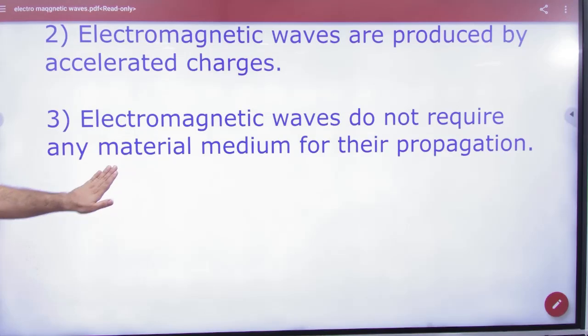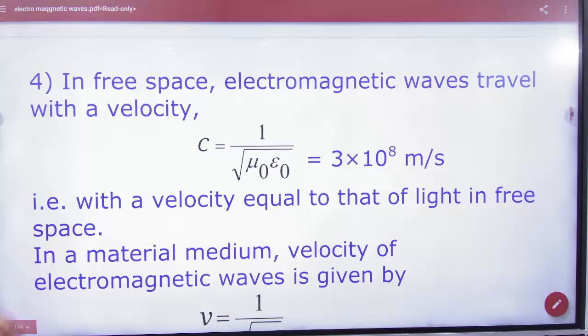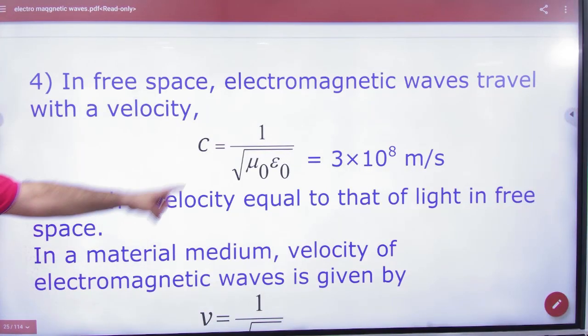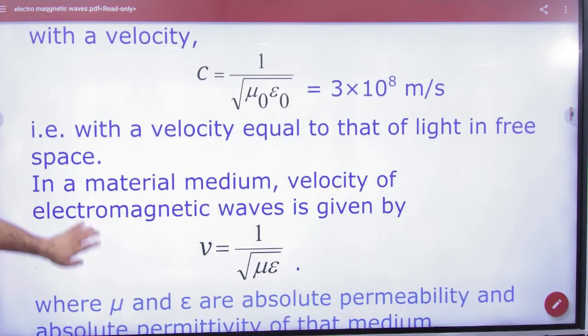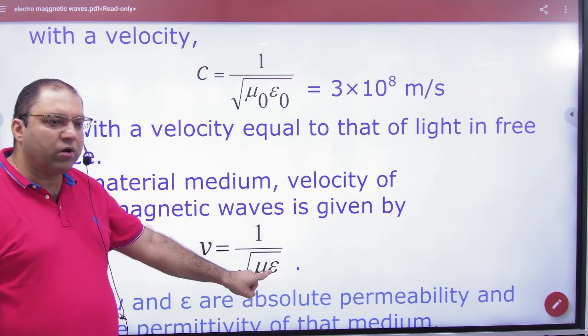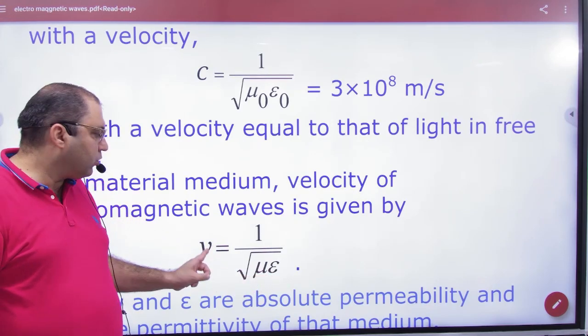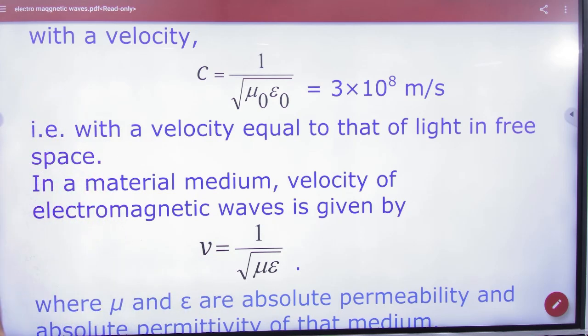EM waves do not require any material medium for its propagation. They can travel in vacuum and see these waves in medium. In free space or vacuum, they have this speed. If I have changed the medium, mu and epsilon change, then what will happen? This will be V. In C, this will be V.